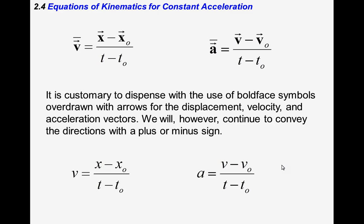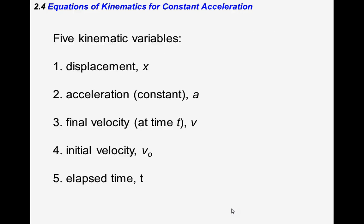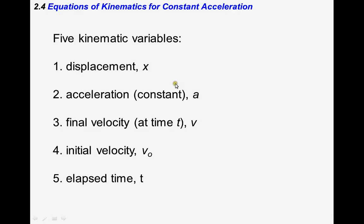Bold-face symbols indicate vectors. For simplicity we use regular variables: v for velocity, t for time, x for displacement, and a for acceleration. There are five kinematic variables: displacement x, acceleration a, final velocity v, initial velocity v-naught (v₀), and elapsed time t.